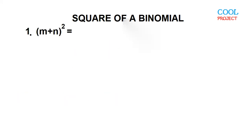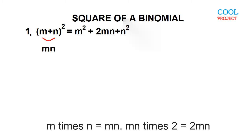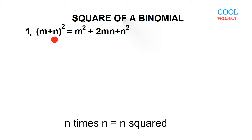Example number one: the square of the quantity M plus N. The first term is M and the second term is N. This is equal to M squared plus 2MN plus N squared. M times M is M squared, M times N is MN times 2 is 2MN, and N times N is N squared.